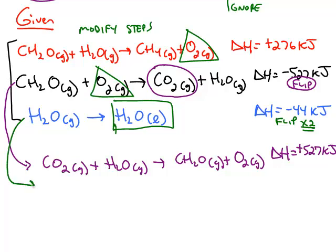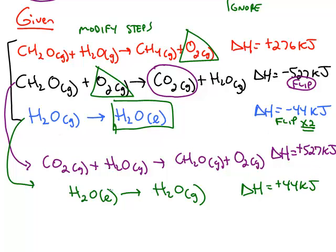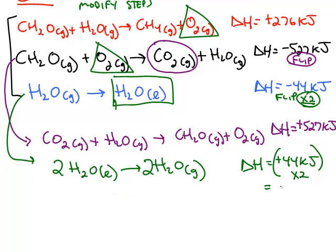So if I flip this one, I'm going to get the water liquid on the reactant side and the water in the gas state on the product side. Delta H changes from a negative 44 to a positive 44 kilojoules. So that's the flipping part. Now we also have to multiply by a factor of two. So each coefficient gets multiplied by two. And that means we also have to multiply the delta H value by two. So this will change to a positive 88 kilojoules.